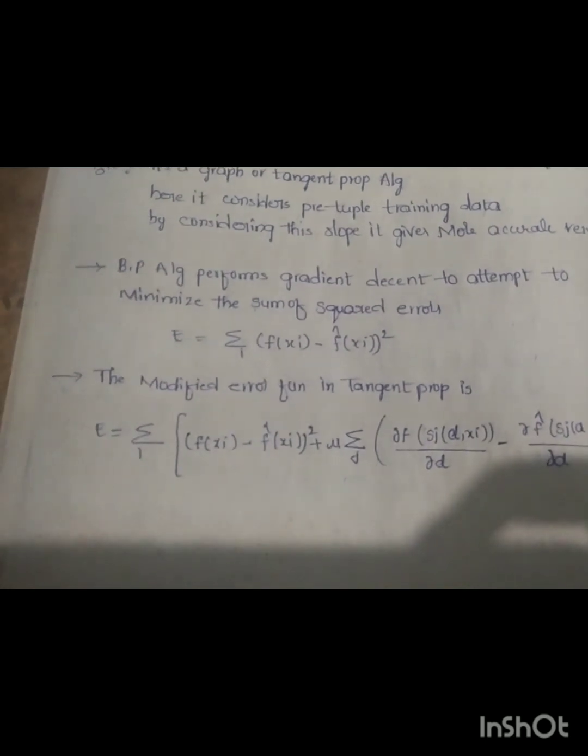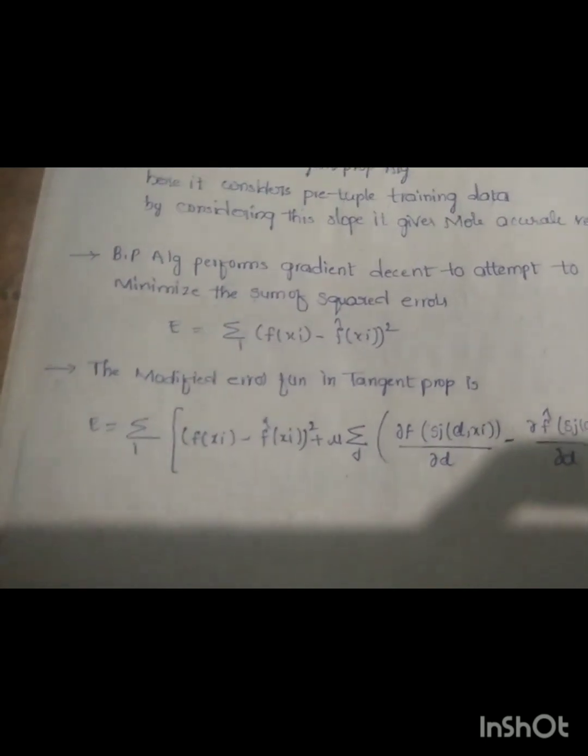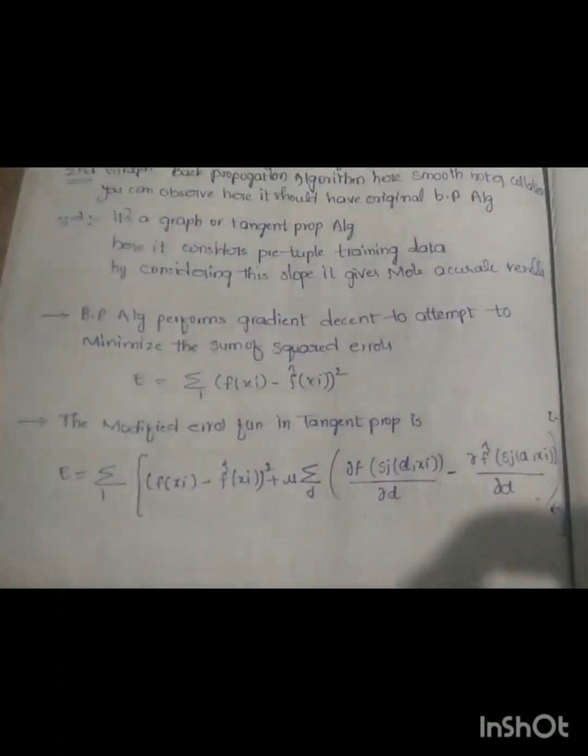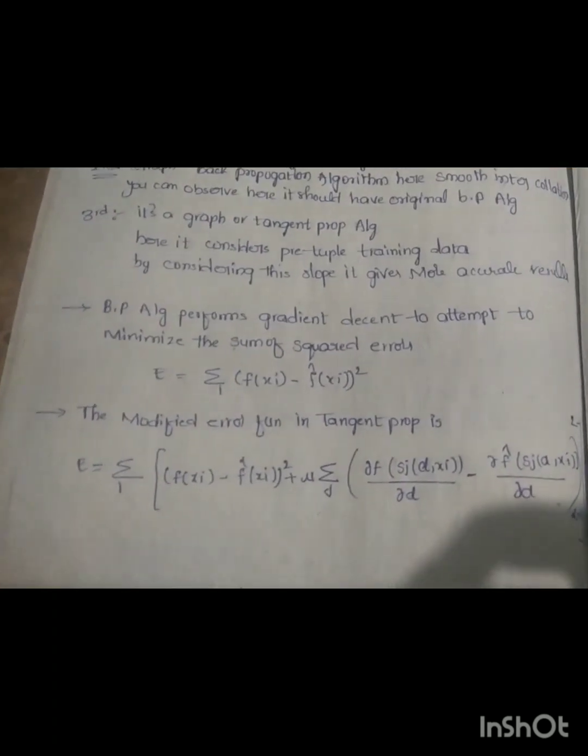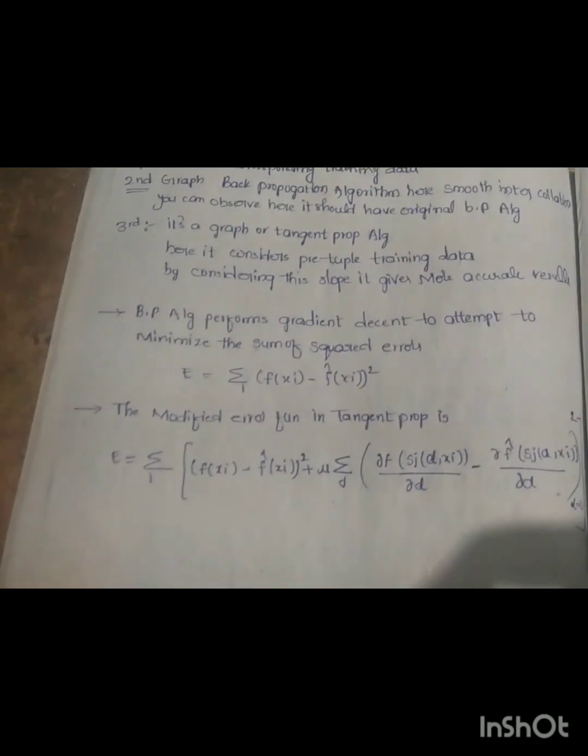The modified error function in tangent prop is given by a formula. Thank you for watching. Do like, share, and subscribe to my YouTube channel Anusha's Vlogs. Thank you.